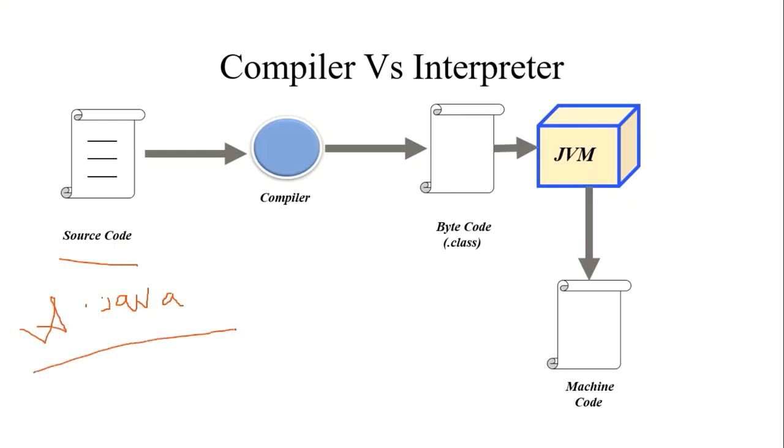Now, whenever this file is written as a source code, it is compiled by the compiler. And, the compiler is responsible for generating a bytecode. And, the extension of this bytecode is .class. But, the name of this file should be same as the source code name. Therefore, it will be A.class file.